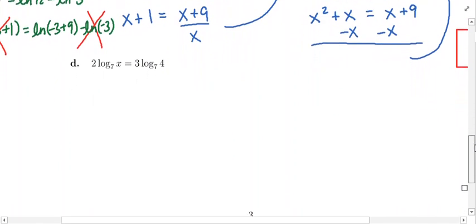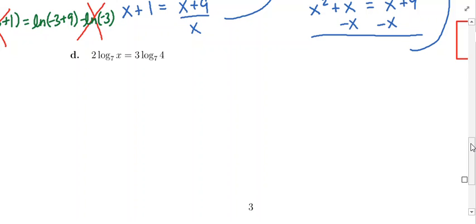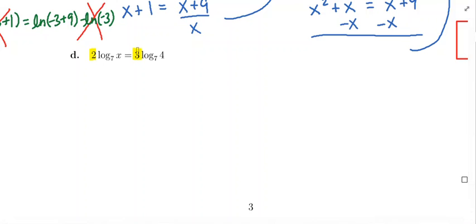Example D is going to be a little different. At first glance, our logarithms are going to be base 7. We've got 2 times log base 7 of x is equal to 3 times log base 7 of 4. We're trying to figure out what values of x make this a true statement. Both logarithms are base 7, and we're aiming for a single logarithm equal to a single logarithm. The problem is these numbers in front — we have 2 times a logarithm equal to 3 times a logarithm, not simply logarithm equals logarithm.